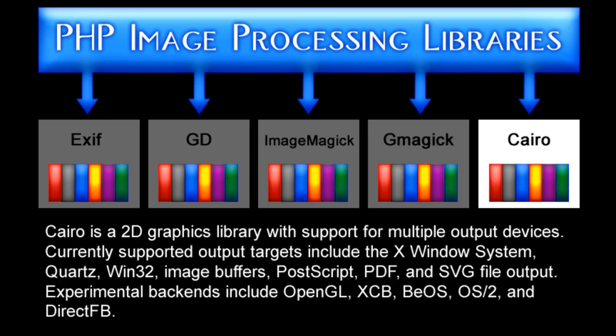Cairo is a 2D graphics library with support from multiple output devices. Currently supported output targets include the X-Windows system, Quartz, Win32, image buffers, PostScript, PDF, and SVG file output. Experimental backends include OpenGL, XCB, BOS, OS2, and DirectFB.